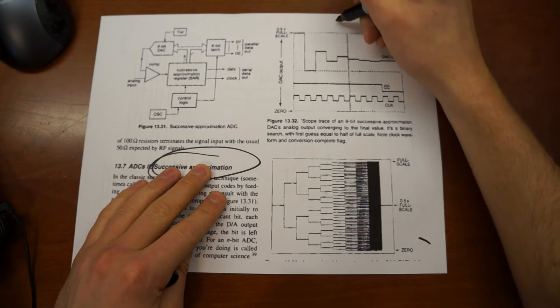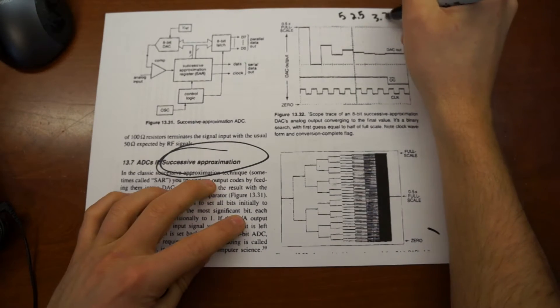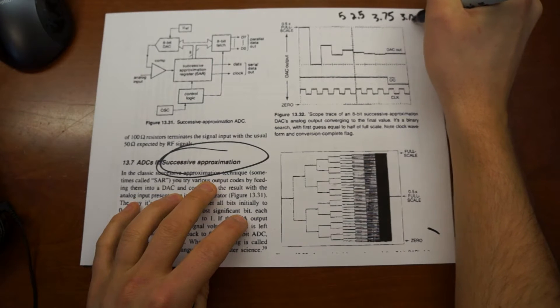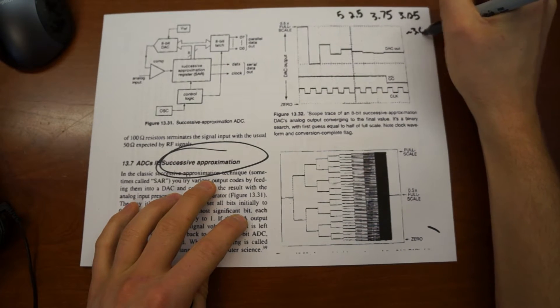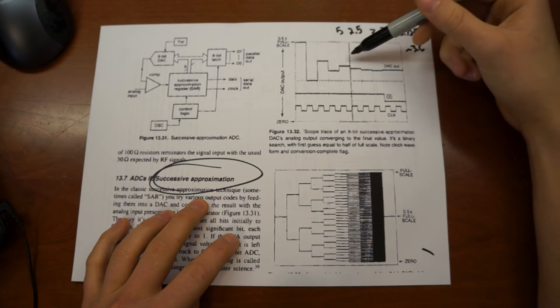Converging to the final value. So as I was saying before, where we were guessing, we went from 2.5 to 3.75 to 3.125. So that was us honing in on our value of 3.6.